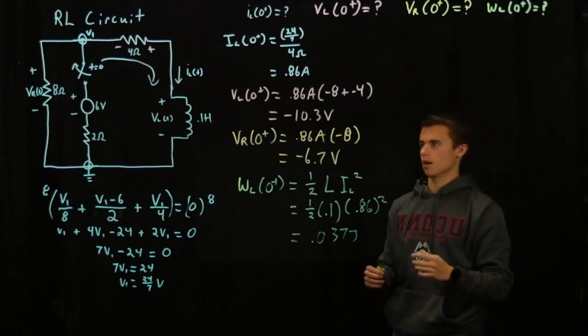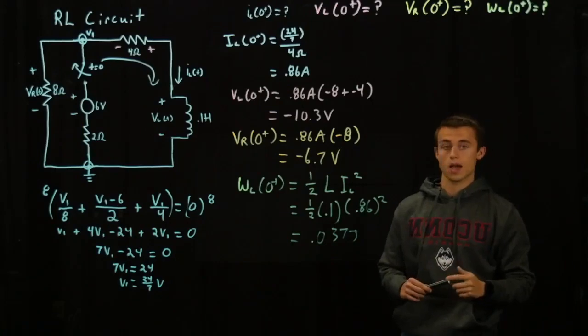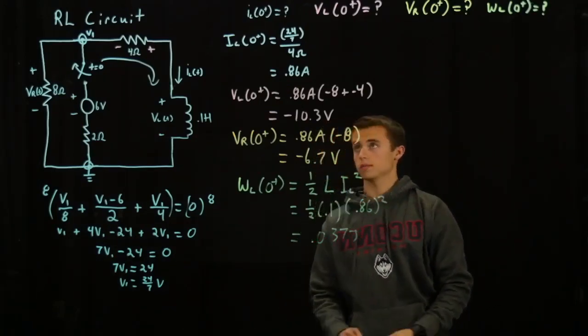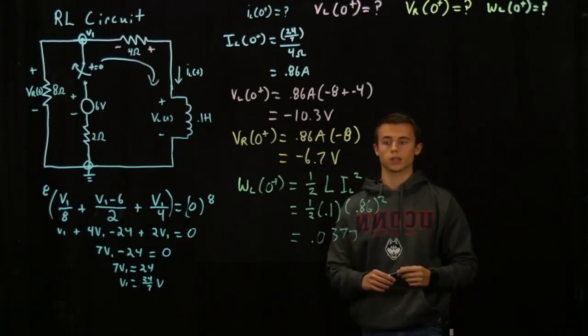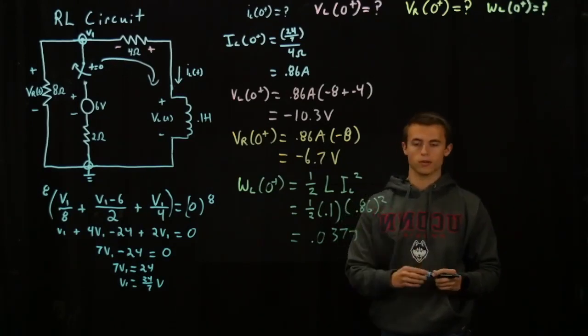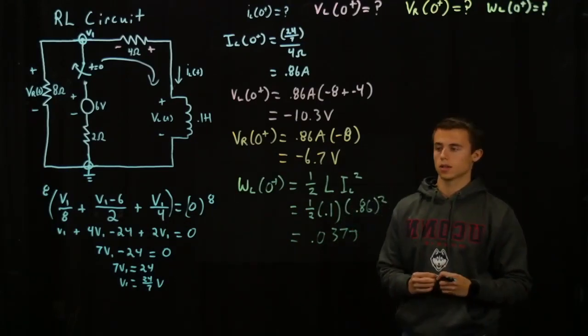Now this is immediately after the switch has been opened and there's not necessarily a decay happening yet. But beyond there, beyond 0 plus at time 1 second, 2 seconds, even a few milliseconds, you can expect a decay within the voltage and currents along with the power. And that's where a tau time constant is going to come into play.